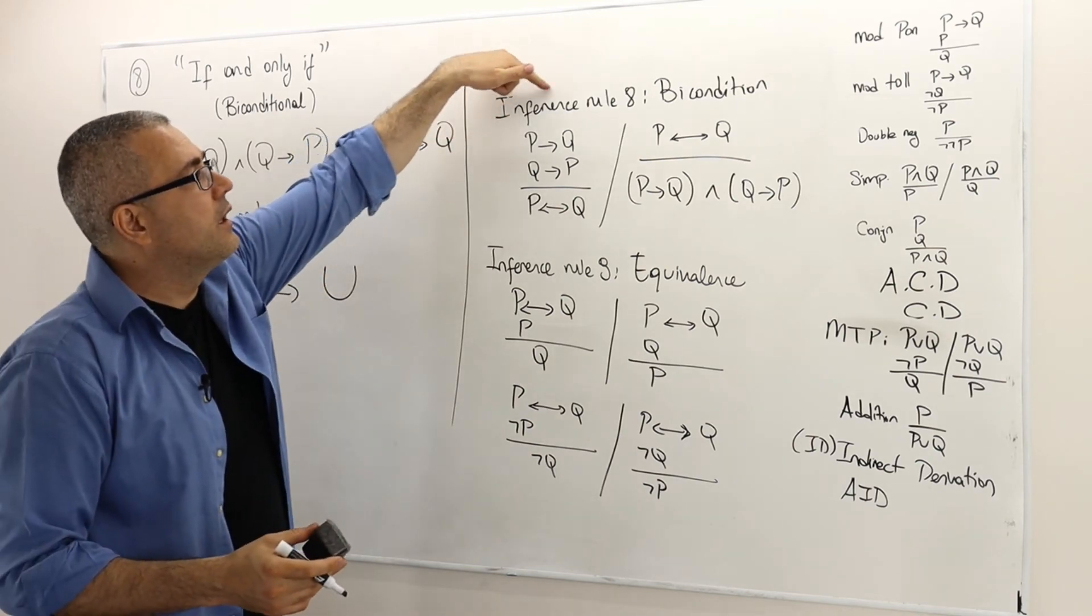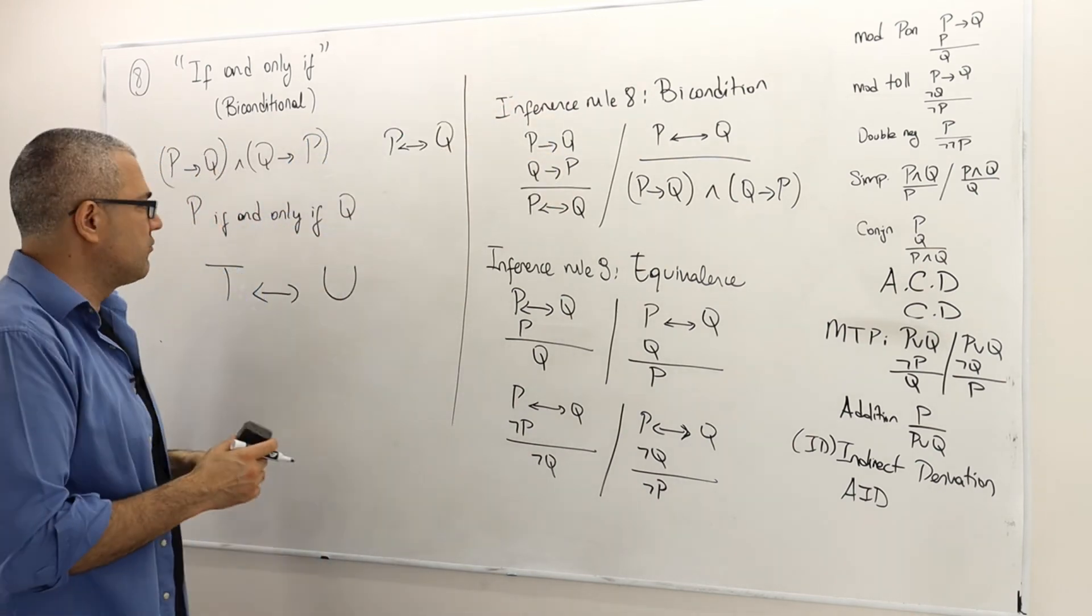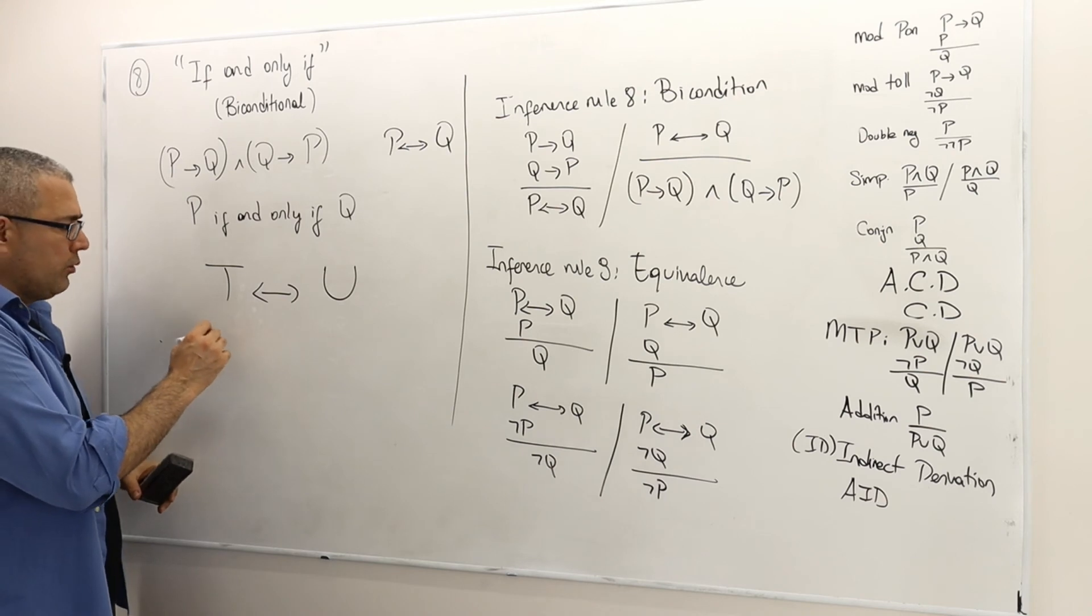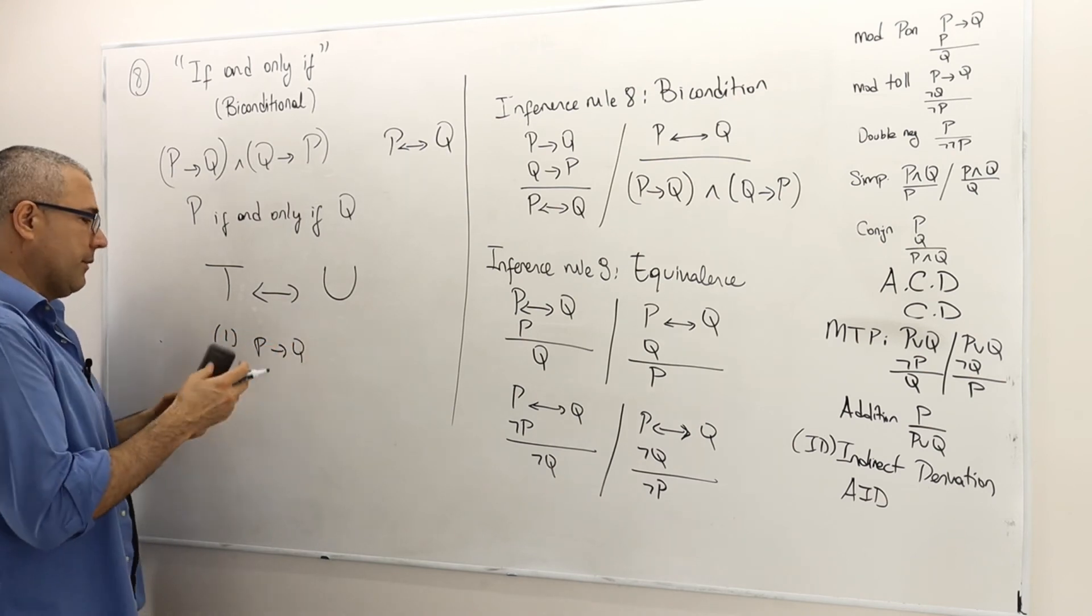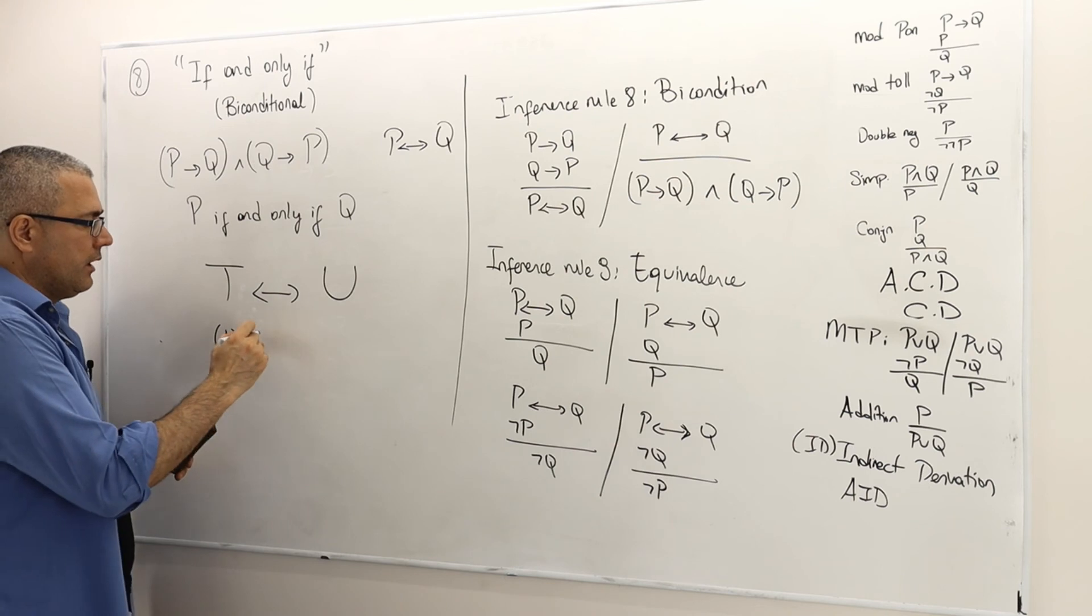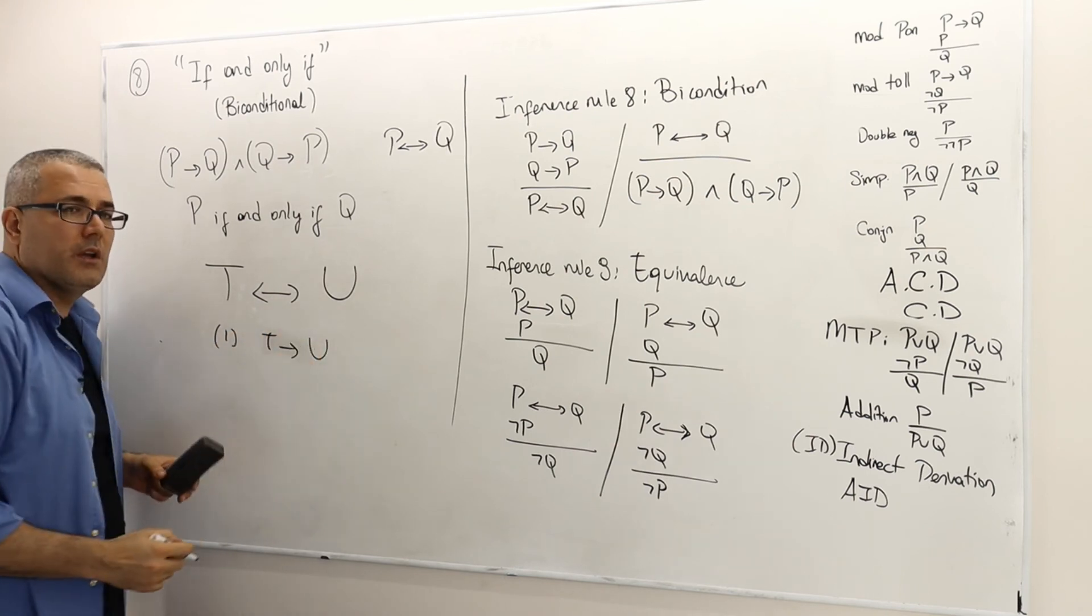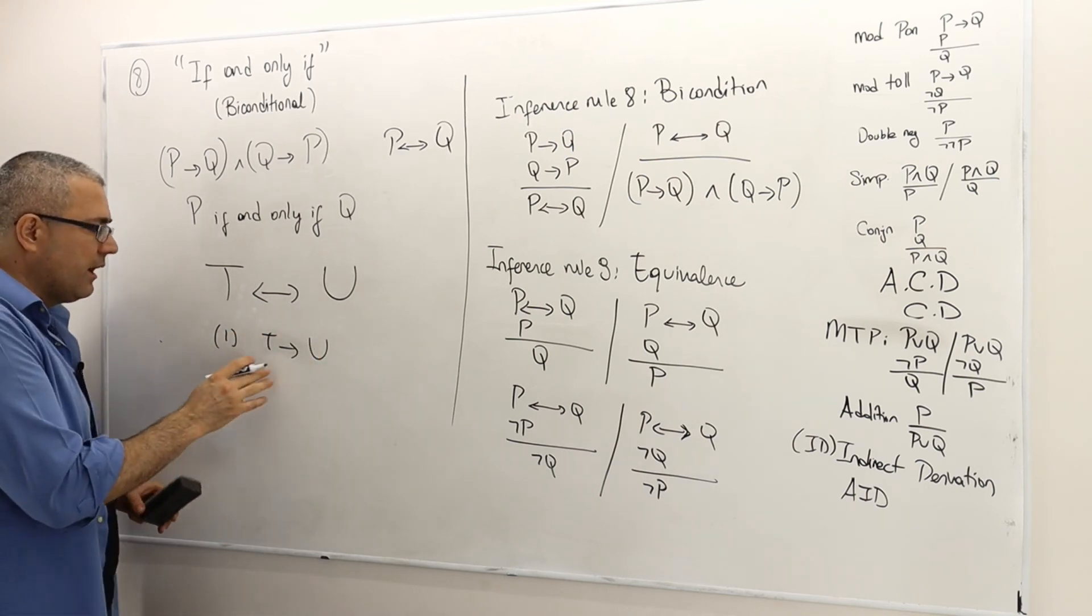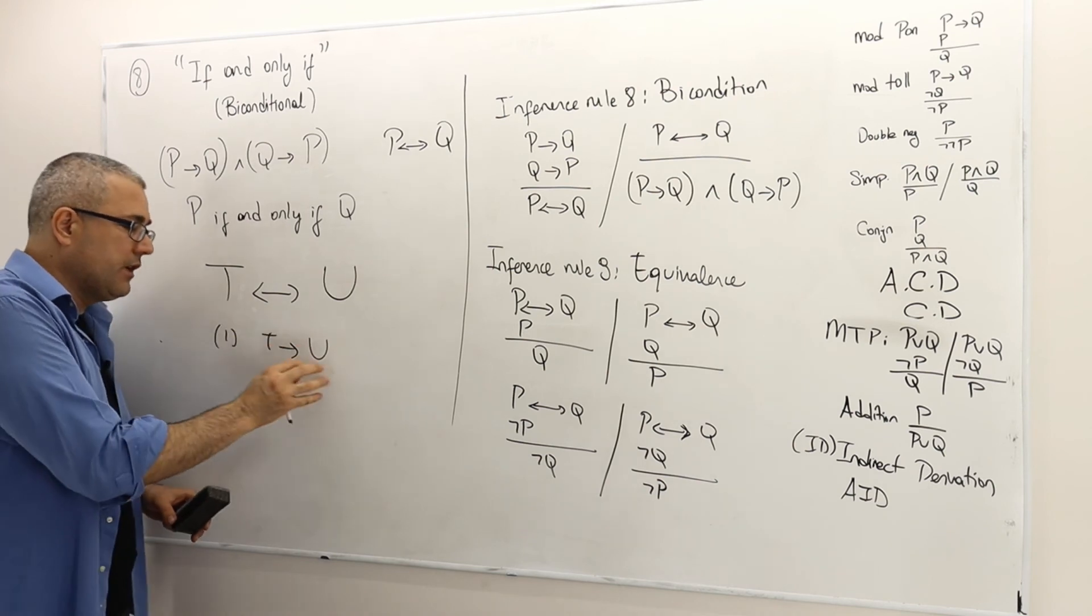Well, you basically use the biconditional rule. So you first show p implies q, I'm sorry, here it's not p q, you must show t implies u first. And then how do you prove this? Assume t, show u. And then you must show u implies t, meaning assume u, show t.